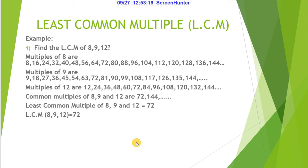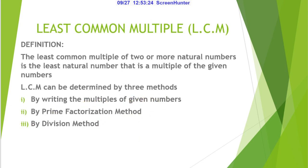So this is the first method to find out the LCM. The first method is writing the multiples of a given number. These are the examples for the first method. In the next videos, I will explain the other methods.